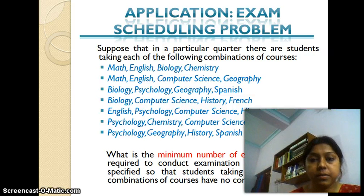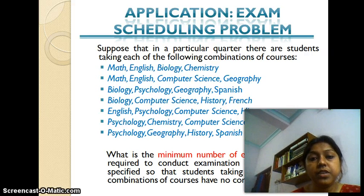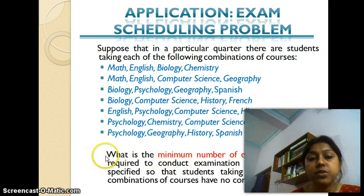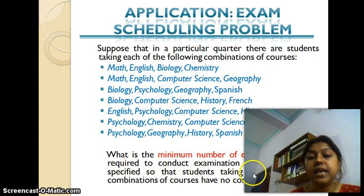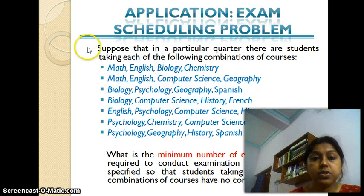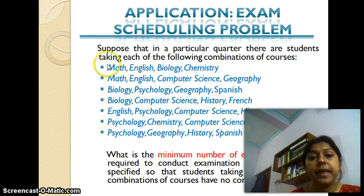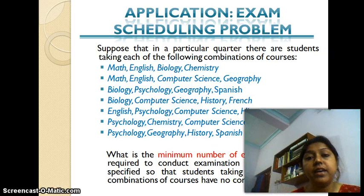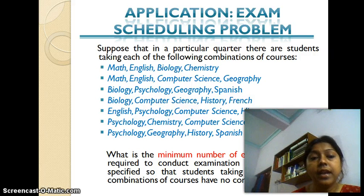Coming to the application of graph coloring — the examination scheduling problem. The objective is to schedule examinations in 10 courses such that students taking any combination of these courses do not have a conflict. The question is: what is the minimum number of periods required to conduct examinations in 10 courses so that students taking any of the given combinations have no conflicts? There are seven combinations that students can choose, covering 10 unique courses. I have designed the solution using backtracking and graph coloring by first drawing an adjacency matrix with 10 rows and 10 columns.